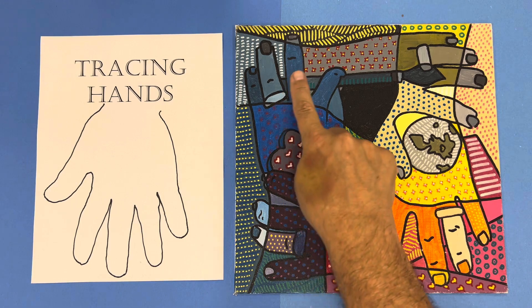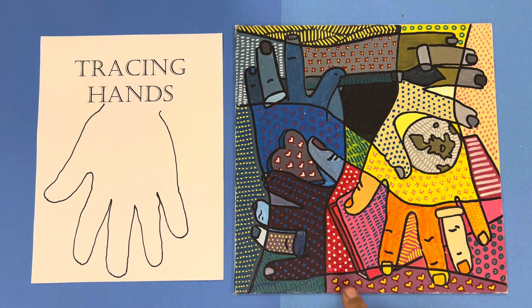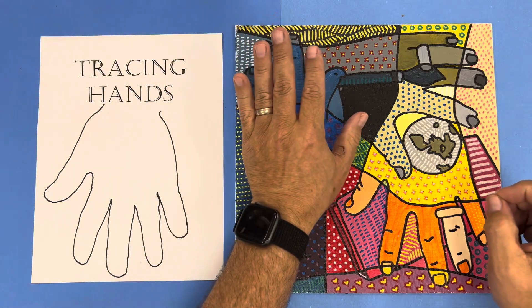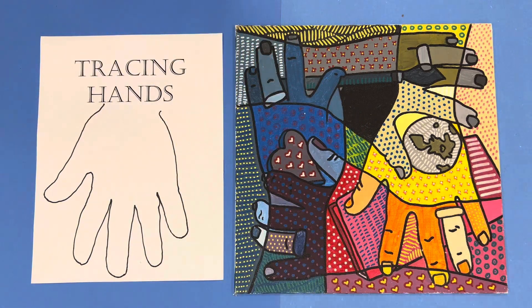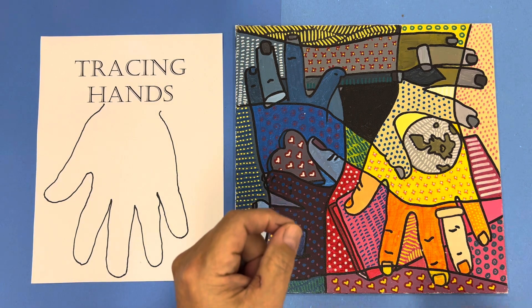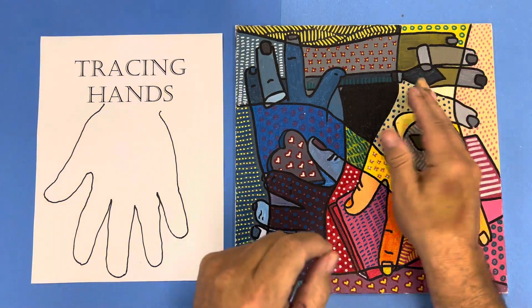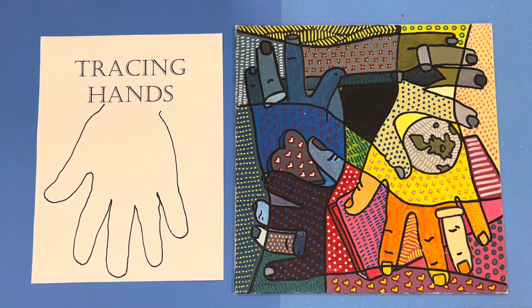You'll notice that the hands overlap in the same direction and because I am right-handed I traced my left hand. If you happen to be left-handed then you will trace your right hand to kind of make this work.